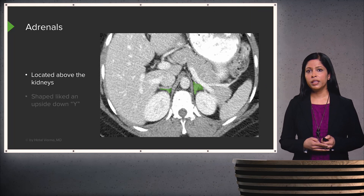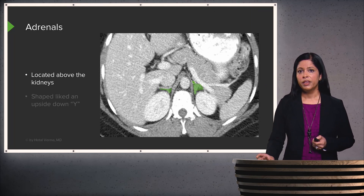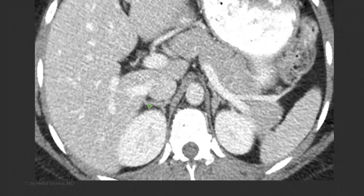The adrenal glands are located above the kidneys. They are shaped like an upside-down Y. They are small and can sometimes be hard to identify, especially when there is adjacent pathology.